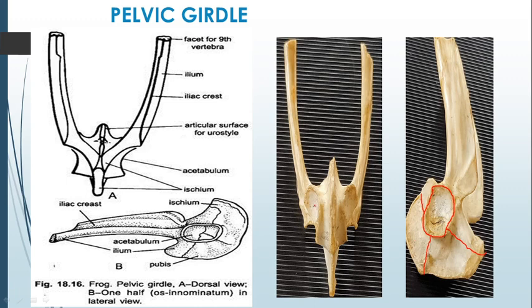The two halves of the pelvic girdle fuse mid-ventrally. When the ilium portions fuse, we call it the iliac symphysis, and when the ischium portions combine, we call it the ischiac symphysis. This completes the study of the pelvic girdle.